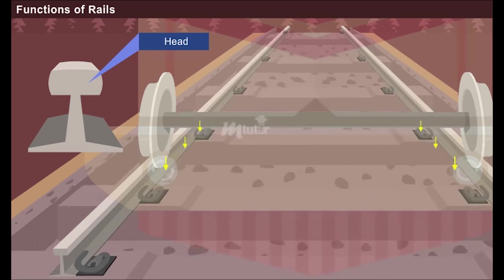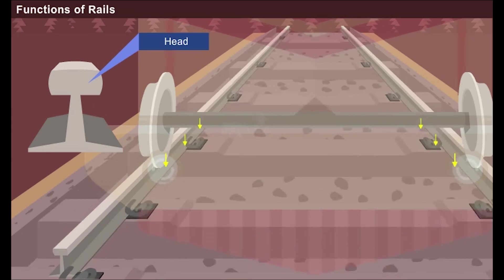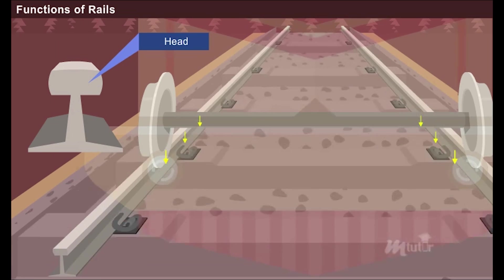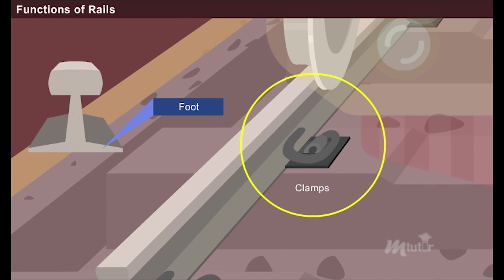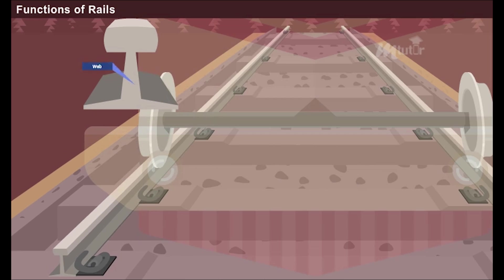The top portion of the rail is the head. It helps to take up the impact of the fast moving wheels. The bottom flat portion is the base or the foot. It helps in clamping the rail to the sleeper as well as in transferring the train loads. The middle portion of a rail is the web. It provides the necessary stiffness to the entire rail section.